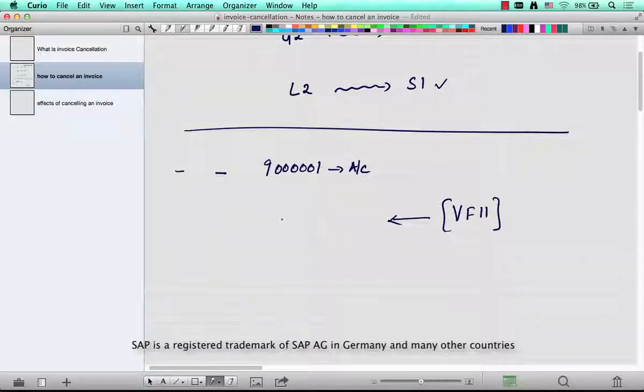Put this invoice number in there, 90001, and then hit enter, and then hit save. It gives you another number, 9 whatever, 9C2, and this is the cancellation invoice of type S1 or S2, depending on if it is an invoice or a debit memo, or credit memo. So, let's go.